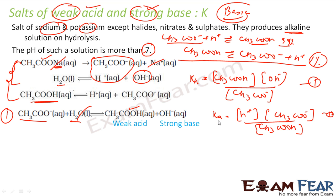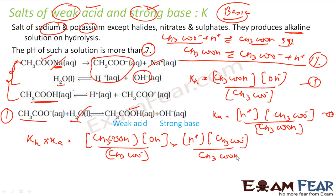Let's try to multiply these two equations. If you multiply K hydrolysis into K acid, you get CH₃COOH into OH⁻ by CH₃COO⁻ into H⁺ CH₃COO⁻. This gets cancelled. What I am left with is H⁺ ion into OH⁻ ion, that is Kw. So the relation I have is very simple. Kh is nothing but Kw by Ka. And this is only for salts of weak acid and strong base.